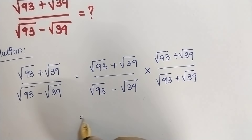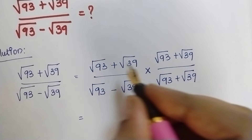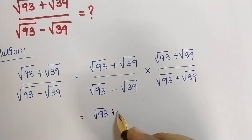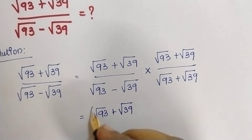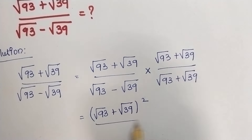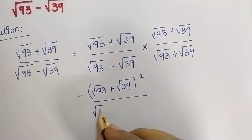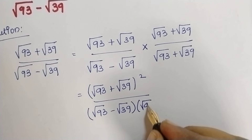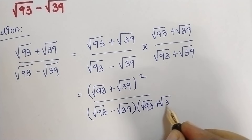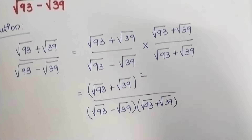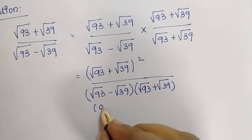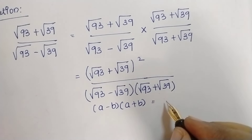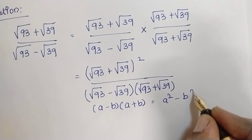Now you can see this is in the format of a into a, which means a squared. Therefore, the numerator becomes root 93 plus root 39, the whole square. In the denominator, we have root 93 minus root 39 multiplied by root 93 plus root 39, which is in the format of a minus b into a plus b, equal to a squared minus b squared.